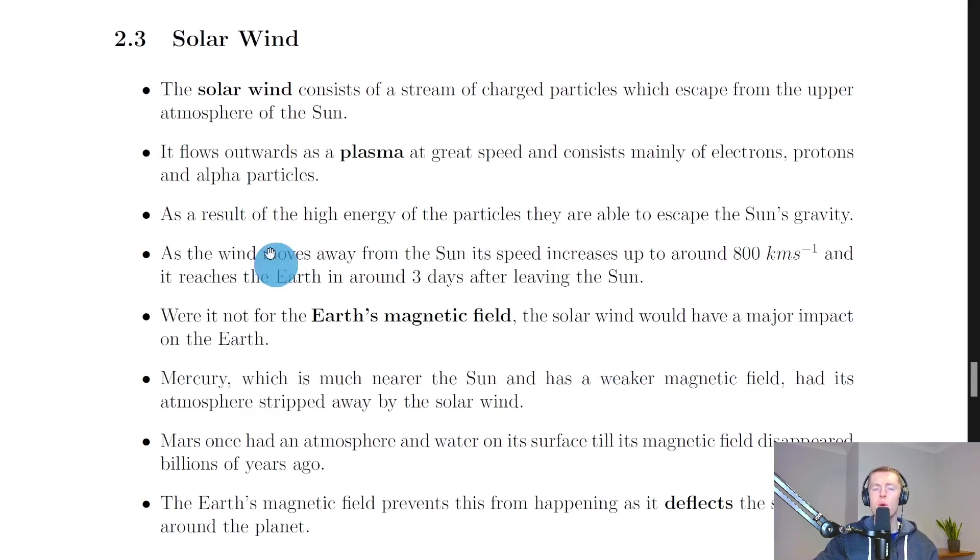So what is the solar wind first of all? Well, the solar wind consists of a stream of charged particles which escape from the upper atmosphere of the sun.